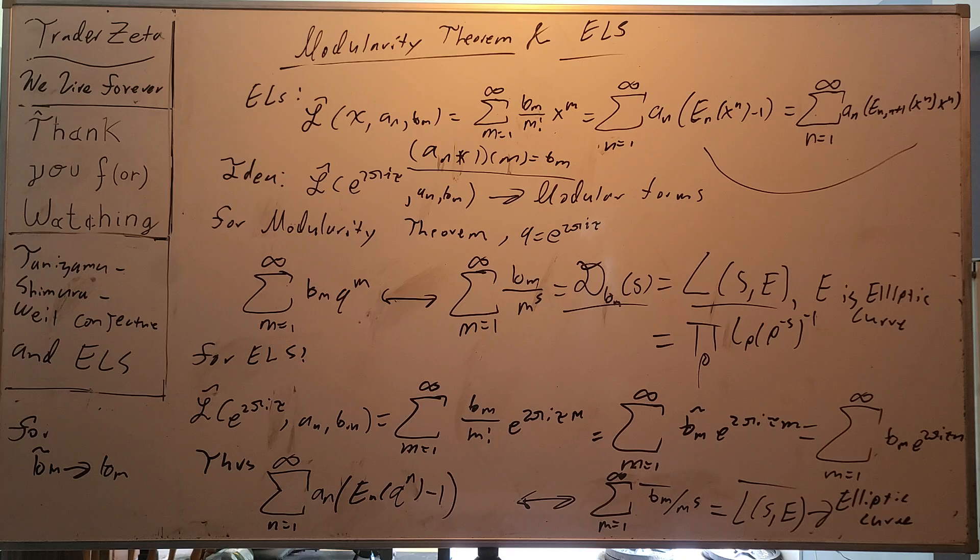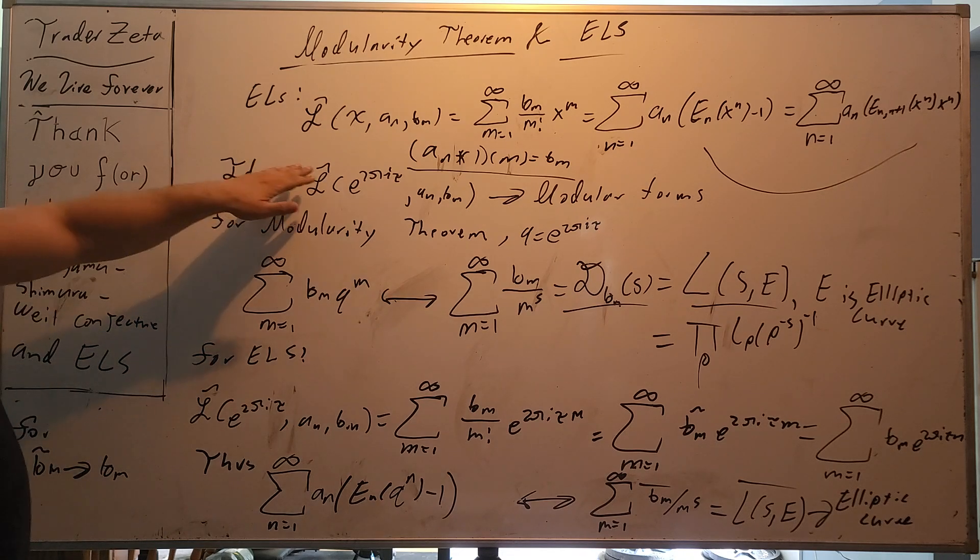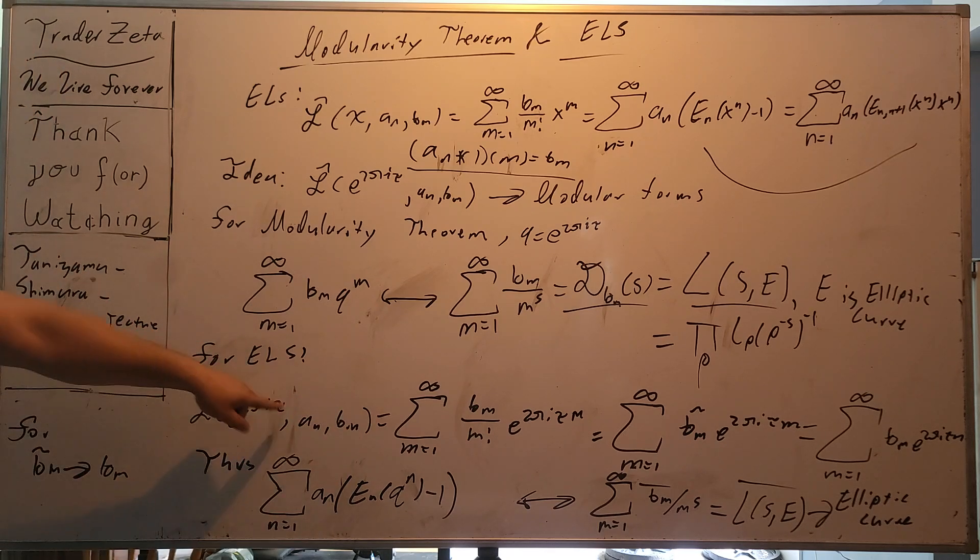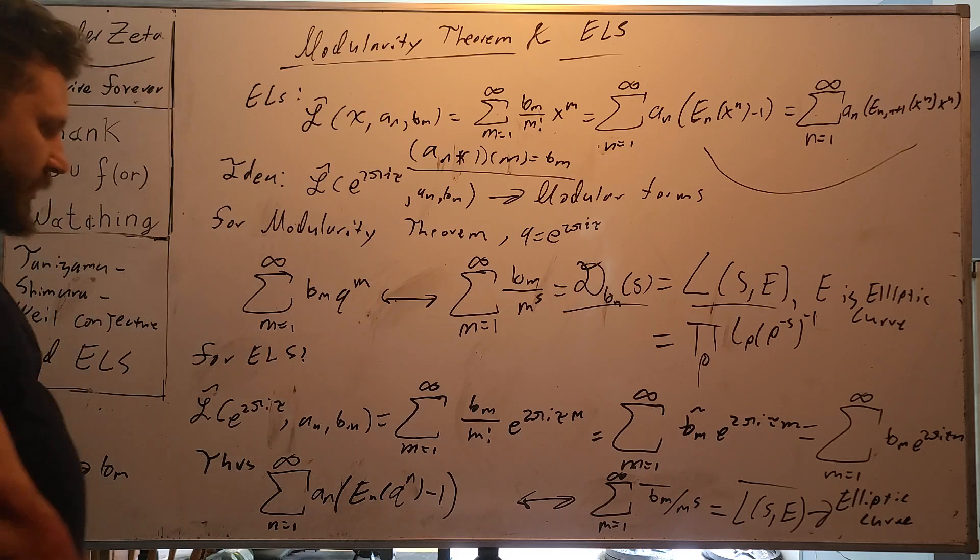Now, what we're going to do is we're going to at least set this up. Of course, this is not probably a rigorous deep proof of the whole thing, but I'd like to give the idea, the intuition behind this right here. So for ELS, say this is a modular form for some a_m and b_m. We assume it's been proven to be a modular form.